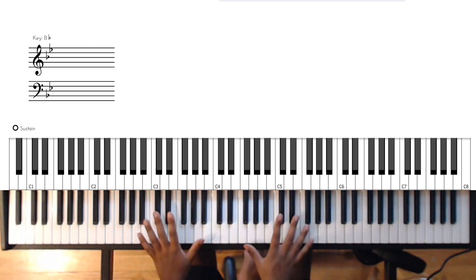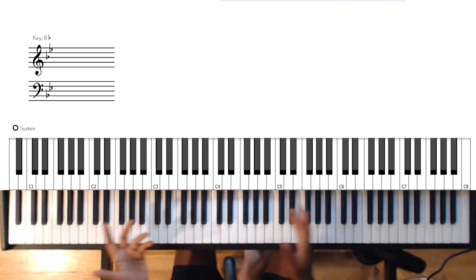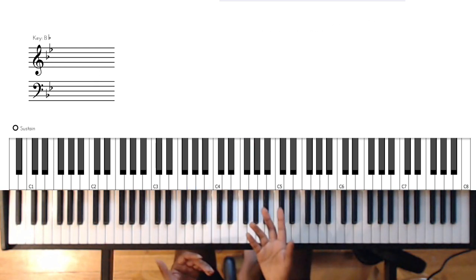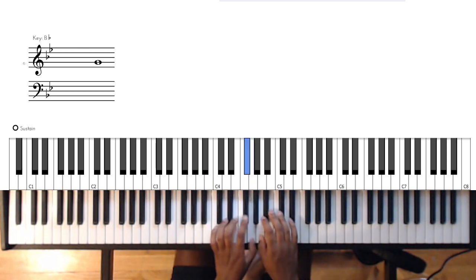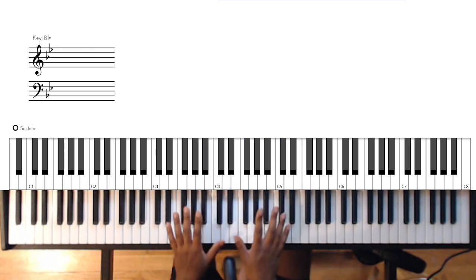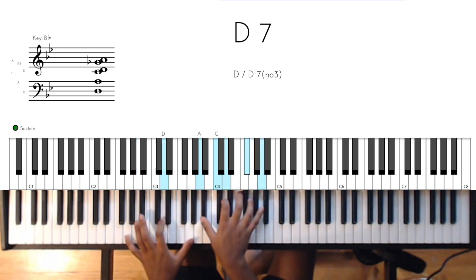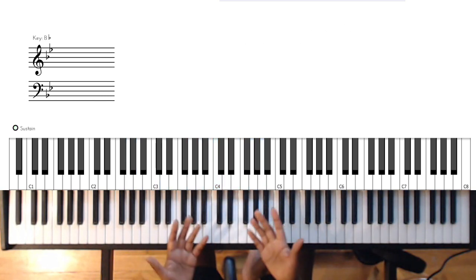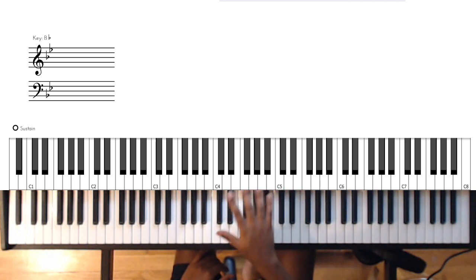Without further ado, the first thing I want to talk about with any song is the key. Knowing what key you're in helps narrow down your options. We're in G minor, and we're also going to be using G melodic minor. I'll talk about that more in a moment. The other concept I want to talk about is two-five. Have you ever heard of two-five-one? It's thrown around a lot in jazz theory.